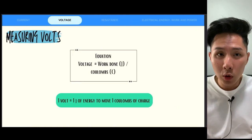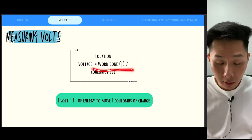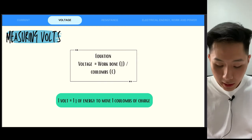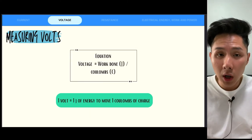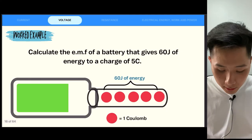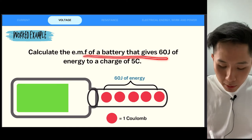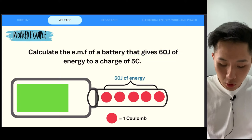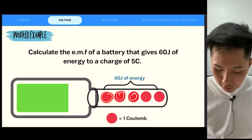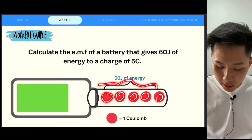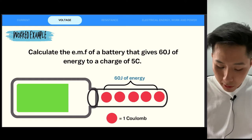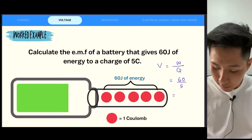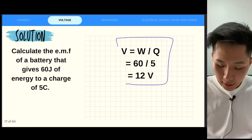The formula for calculating voltage is work done divided by charge: V = W/Q — how much work is done to move one coulomb of charge. The more work done to move one coulomb, the more current you can push in your circuit. Worked example: calculate the EMF of a battery that gives 60 joules of energy to a charge of 5 coulombs. Using V = W/Q: 60 ÷ 5 = 12 volts.